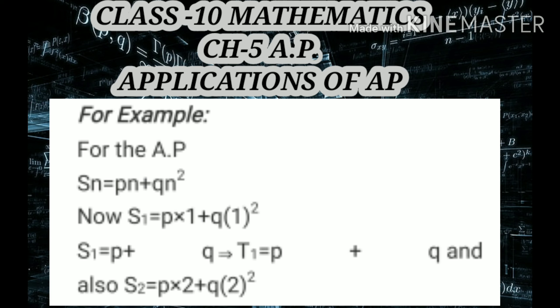If we want to find the sum of one term, that is the first term, we substitute the value of n = 1. So S_1 = P×1 + Q×1² = P + Q. This is the sum of one term, that is the first term T1 = P + Q.